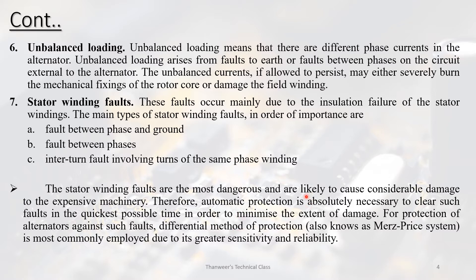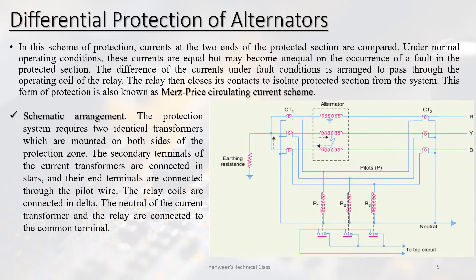For greater sensitivity and reliability, indirect protection is used involving current transformers (CTs) connected in a specific configuration. The CT secondaries are connected in star, and their end terminals are connected through pilot wires. The relay coils are connected in delta. The neutral of the earth transformer is also connected in this arrangement.